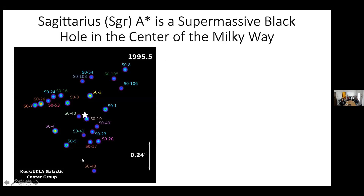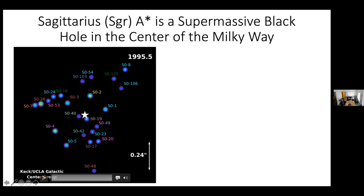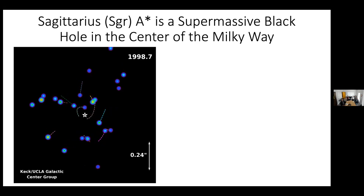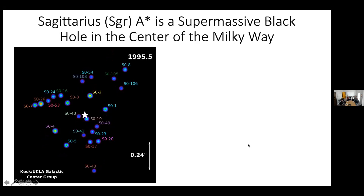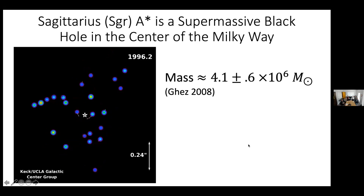So what is Sagittarius A-star? There is very strong evidence that it is a supermassive black hole at the center of our galaxy. This video shows stars at the center of our galaxy. By tracking the eccentricity and orbits of these stars, we can find that the central object has an incredible mass of 4 million suns.